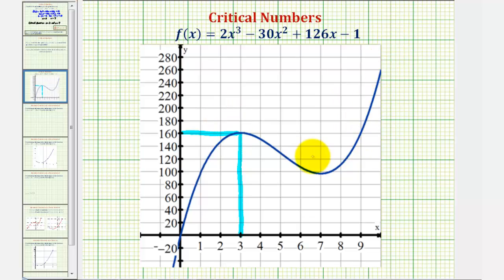And then notice at x equals seven we have a low point. Therefore we have a relative minimum at x equals seven, which looks like it's a little bit less than 100.